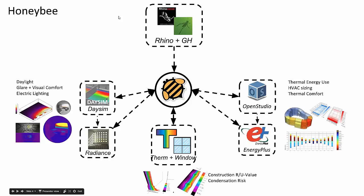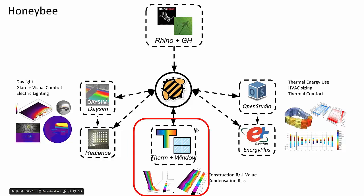Just so you know where we are in the larger Honeybee series - the whole series kicked off looking at Ladybug, which we still use because Honeybee builds off of it. We spent four sessions covering energy modeling capabilities, two sessions on daylighting and electric lighting and glare analysis. Now we are in the last branch of the Honeybee web, looking at Honeybee's connection to Therm and Window - mostly looking at construction R and U value evaluation, but also useful for condensation risk.